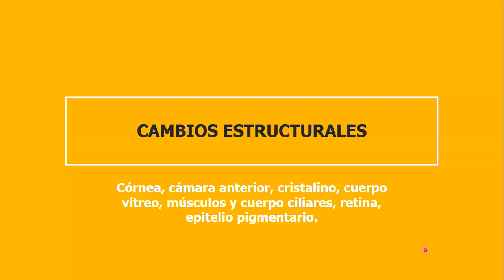En cuanto a las estructuras ópticas del ojo, nos referimos a la córnea, cámara anterior, cristalino, cuerpo vítreo, músculos y cuerpos ciliares, retina y epitelio pigmentario de la misma.